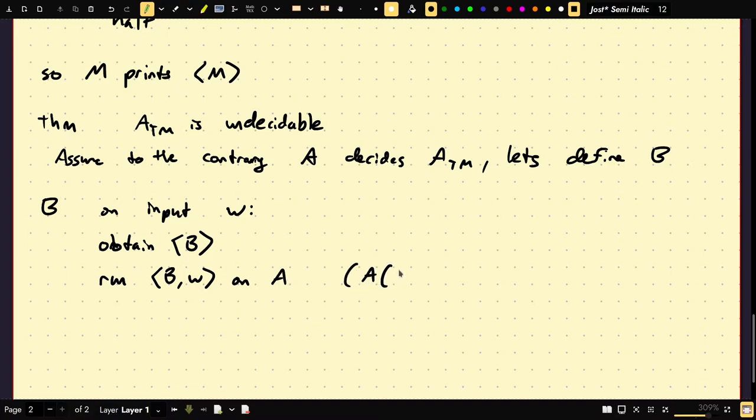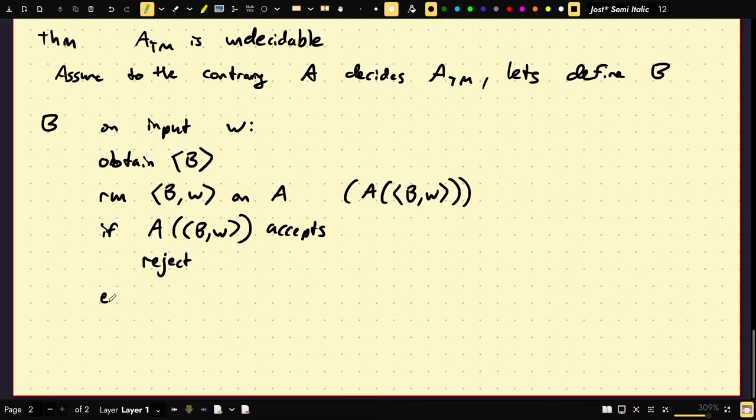Let's define our contradiction then. Define B. So B does what on input which is any word, obtain the encoding of B, run the decider for ATM B comma W on A. So we're going to write, I could write this as A of B comma W, right? So if A of B comma W accepts we reject, else. So this would be, this because it's a decider, this branch will also always be taken, which means A of A on B comma W will reject, we're going to accept.